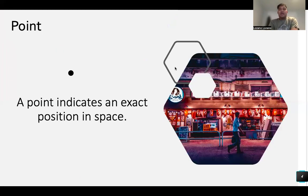First, so we have a point. This is a point. Nakikita niyo maliit na yan na color black. So a point indicates an exact position in a place. So when we see a point, it will give exact direction or exact position in one place.